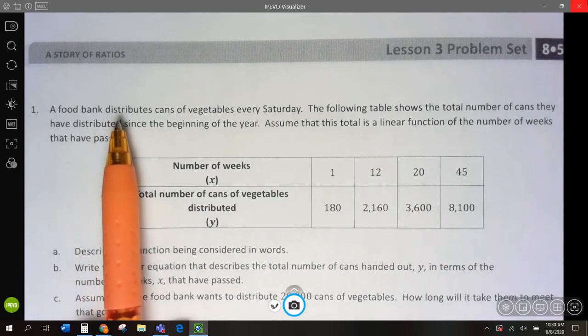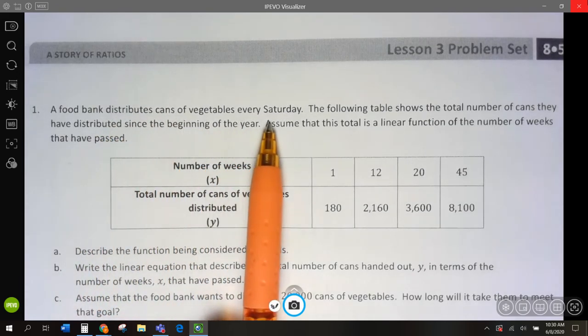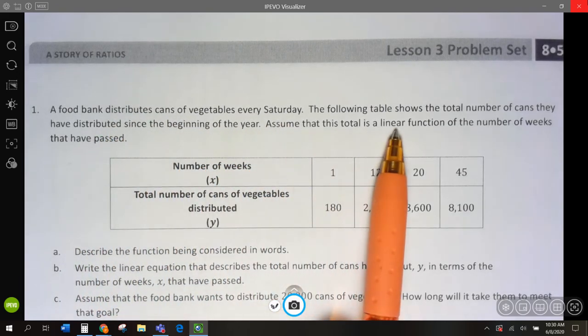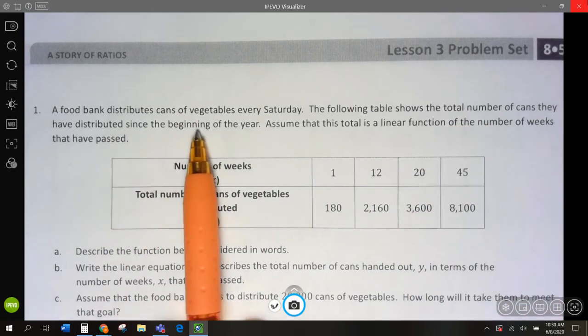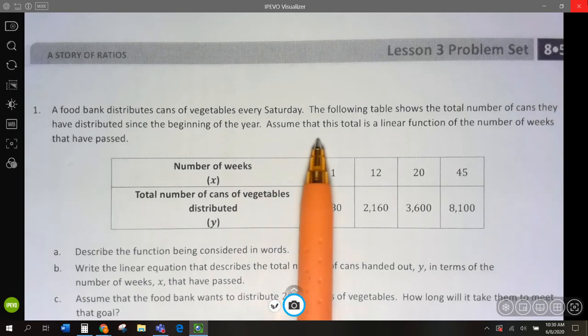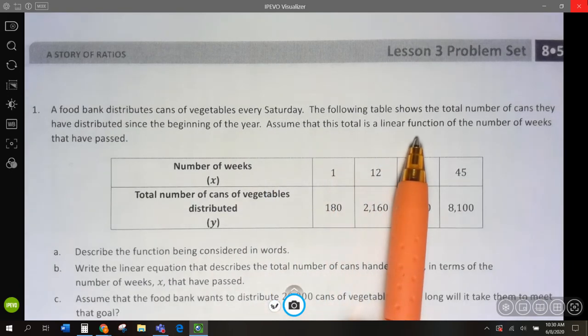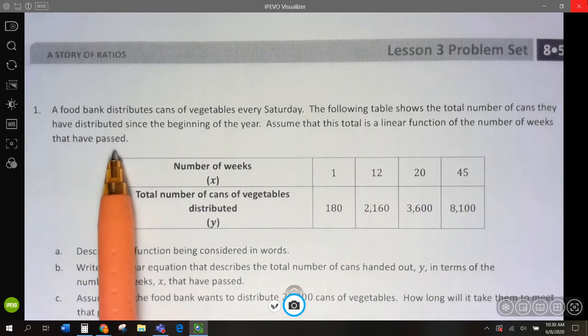Here we have a food bank distributes cans of vegetables every Saturday. The following table shows the total number of cans they have distributed since the beginning of the year. Assume that this total is a linear function of a number of weeks that have passed.